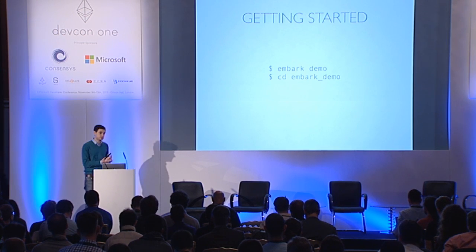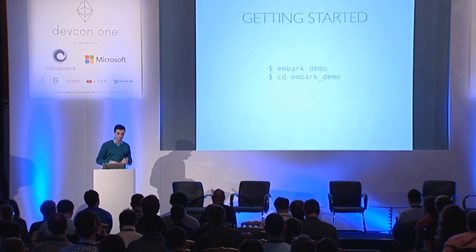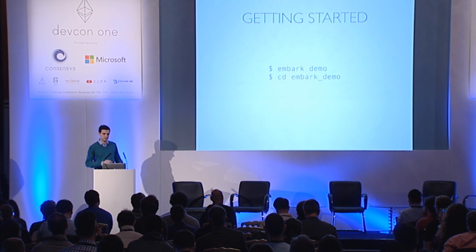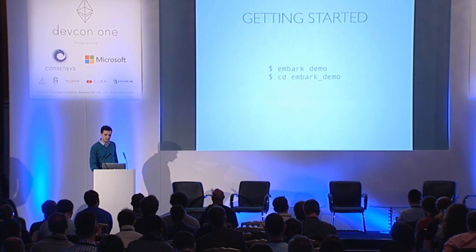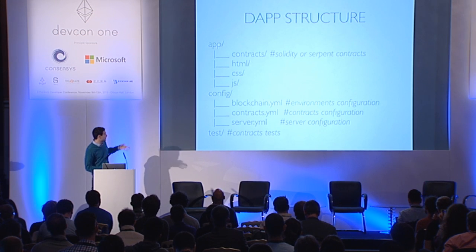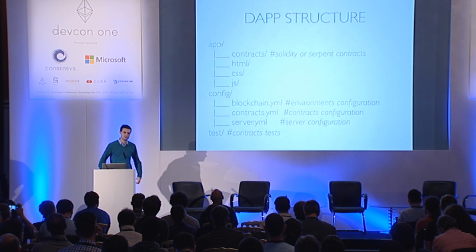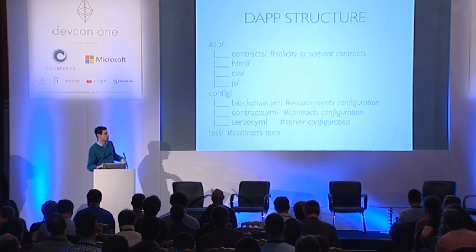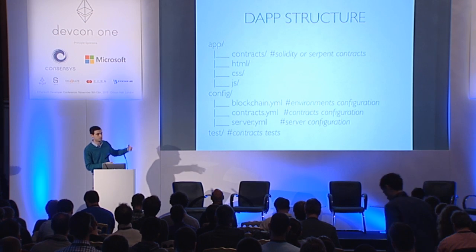The quickest and easiest way to get started is to open up your terminal, type 'embark demo', CD into the app directory, and you'll find something like this. That's your directory structure. Embark uses so-called COC — convention over configuration — so your contract files naturally go into the contracts directory, your HTML in the HTML directory, and so on.